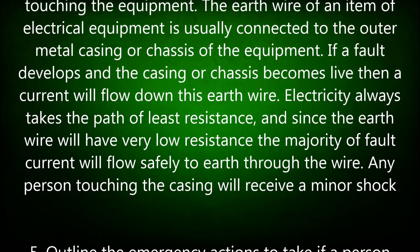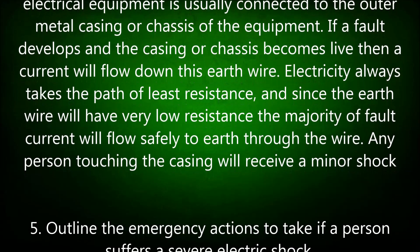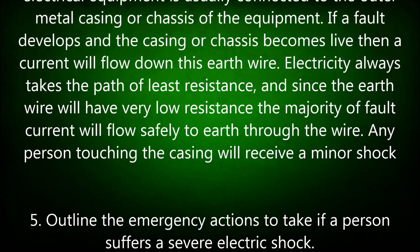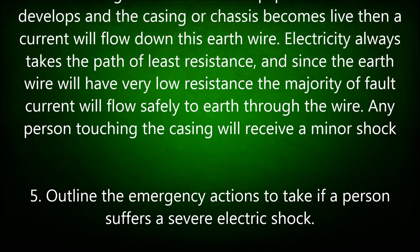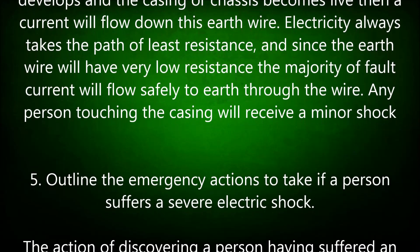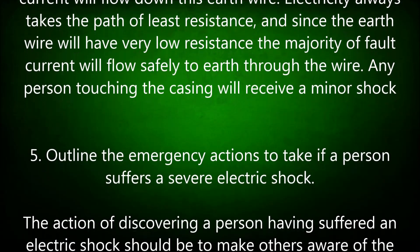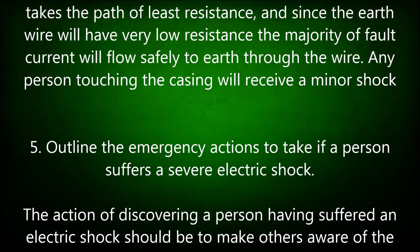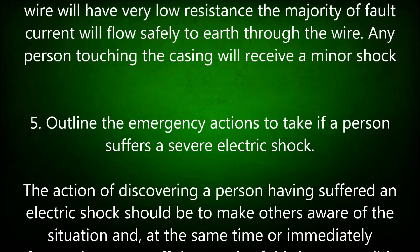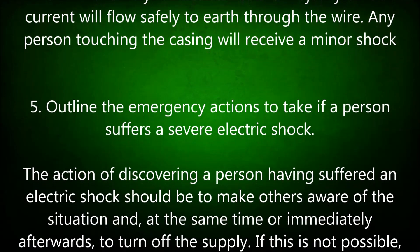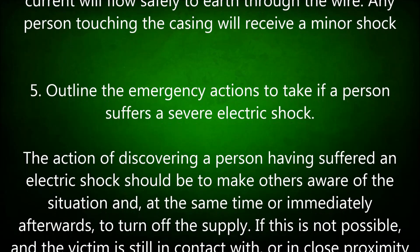If a fault develops and the casing or chassis becomes live, then a current will flow down this earth wire. Electricity always takes the path of least resistance, and since the earth wire will have very low resistance, the majority of fault current will flow safely to earth through the wire. Any person touching the casing will receive only a minor shock.